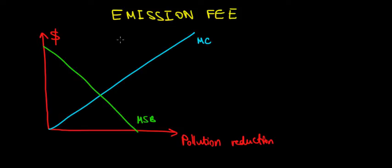Let's start working on the concept of emission fee in this video, and we'll do so using this graph. We have the relationship between dollars and pollution reduction, and we can see we have a marginal cost line and a marginal social benefit.